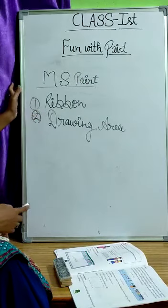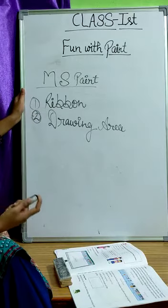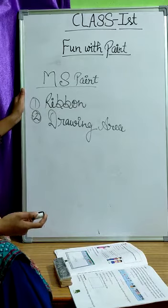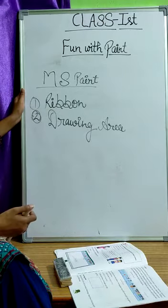First, ribbon. You have a pencil box. It contains pencil, eraser, crayons, sharpener, etc. You can use pencil or crayons to draw a picture.